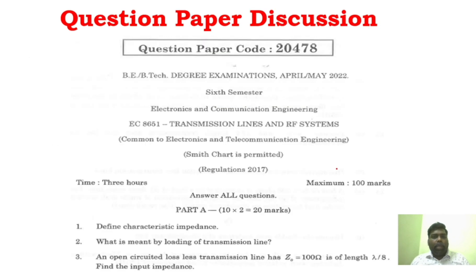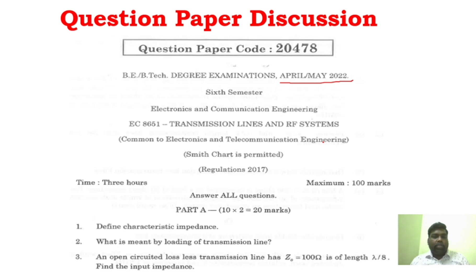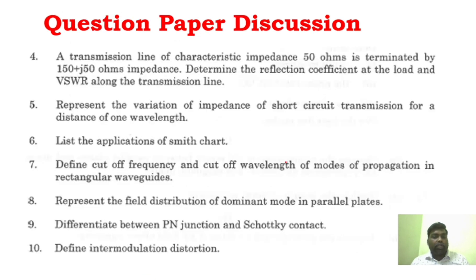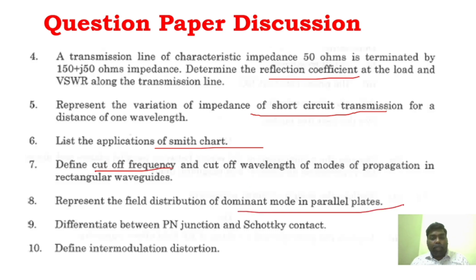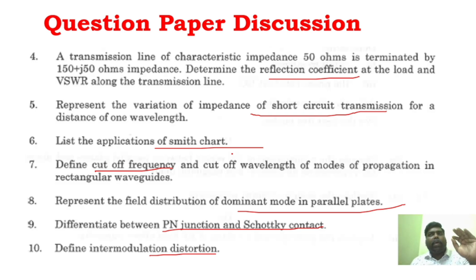Now we will see question paper discussion. It is generalised — if you have an impedance transmission line or reflection coefficient, you can learn it in 1 or 2 months. We are taking the April and May 2022 question paper. Key two-mark questions include: define characteristic impedance, loading of transmission line, input impedance, reflection coefficient, impedance of short circuit transmission, application of Smith chart, define cutoff frequency and cutoff wavelength, dominant mode in parallel planes, difference between P-N junction and Schottky contact, and intermodulation distortion. All these are direct questions. From 5-6 years of question papers, you can confirm at least 7 two-mark answers.